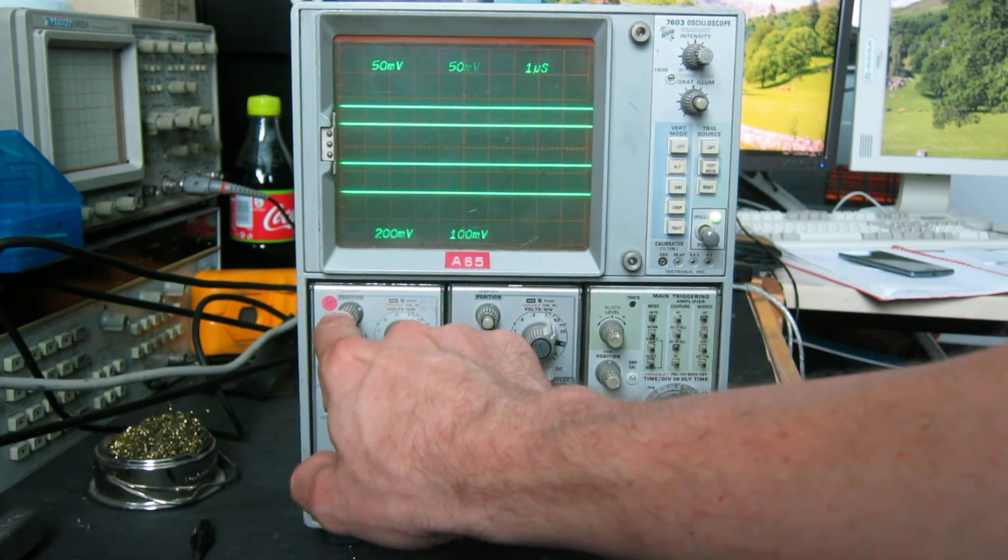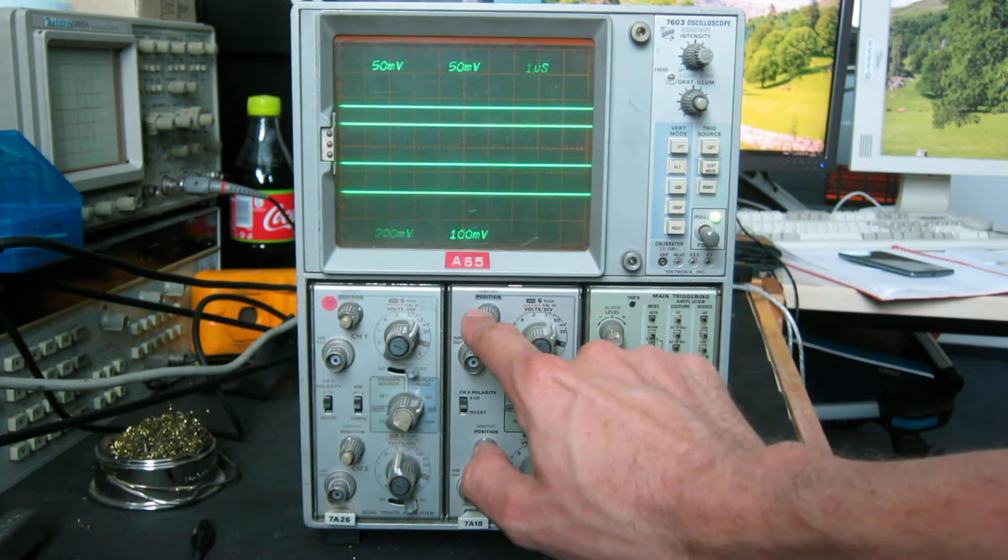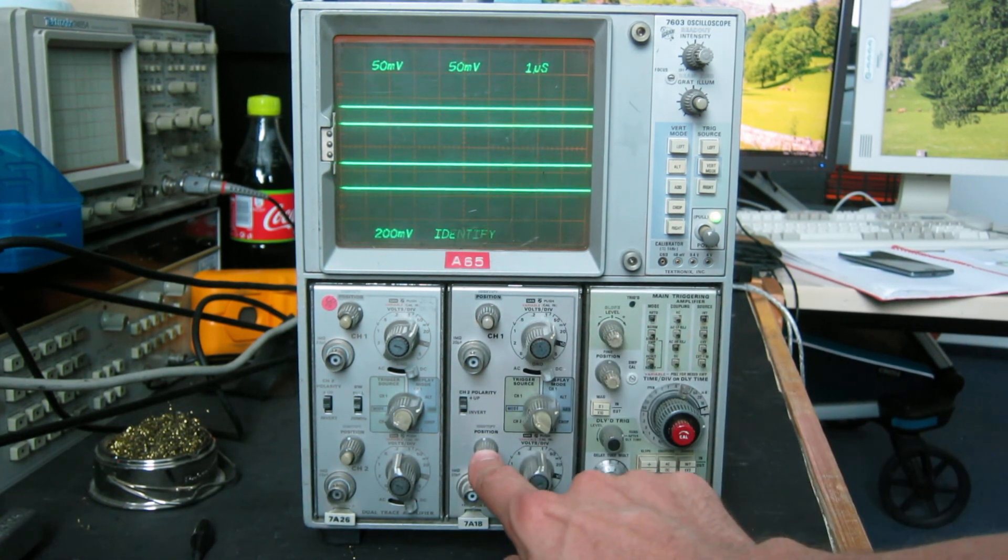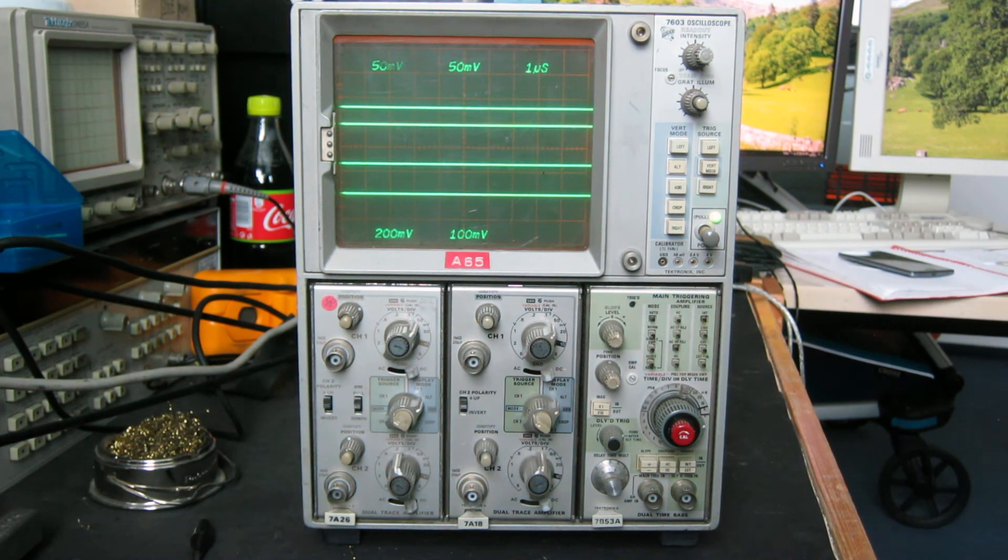We can identify each one by pressing its button. That's the top one. Identify. Identify that one. Identify that one. And identify that one. So that's four traces all at the same time.